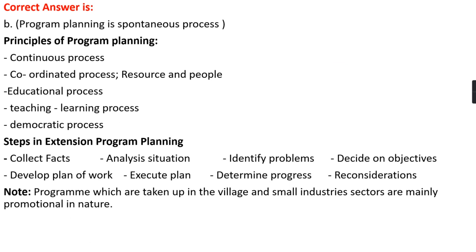The principles of program planning include: program planning is a continuous process, program planning is a coordinated process involving coordination between resources and people, program planning is an educational process, program planning is a teaching-learning process, and program planning is a democratic process. The steps in extension program planning start with collection of facts about where the extension program is going to take place, then analyzing the situation.